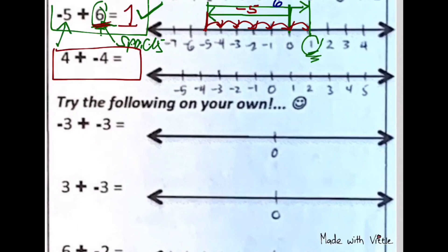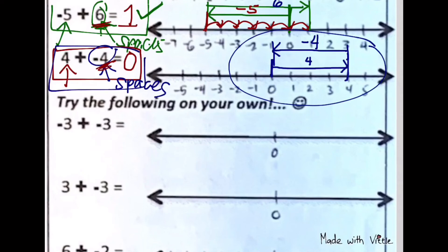Now positive 4 plus negative 4 — remember our zero pairs. These are zero pairs because they're opposites being added to each other. Different signs, so subtract: 4 minus 4 is 0. On the number line: first number is positive 4, so start on 0, go to the right, stop on positive 4. The next number is negative, so we go back to the left 4 spaces. This represents the equation 4 plus negative 4 equals 0.